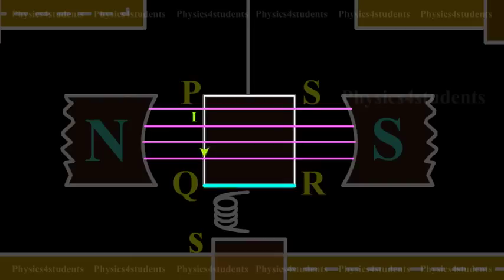Hence, the sides QR and SP are always parallel to the field. So, they do not experience any force.